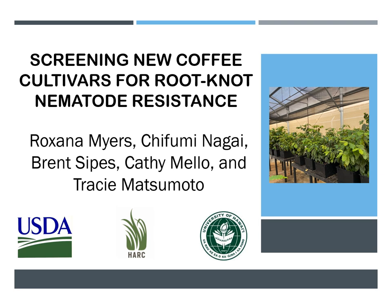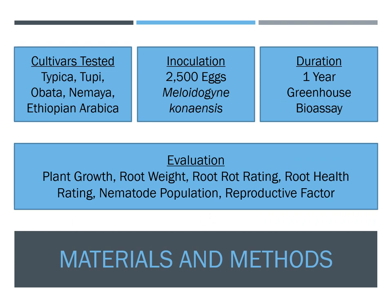As a nematologist, my responsibility is to screen these cultivars so I am able to make a recommendation to graft them onto nematode tolerant rootstocks before planting, or plant directly in the field, since it doesn't make sense to replant your field with CLR resistant material only to see mortality after 10 years from root knot nematodes. Because the WCR material is still in tissue culture, we started screening Obata and Tupi, which are known CLR resistant cultivars already being cultivated in Hawaii. These were compared with nematode resistant Nemaya and Ethiopian Arabica, as well as the nematode susceptible Typica. This was conducted in potted plants in the greenhouse. Each plant was inoculated with 2,500 eggs of Kona coffee root knot nematode and allowed to reproduce for one year. Plant growth, root weight, root rot rating, root health rating, nematode populations, and nematode reproductive factors were all evaluated.